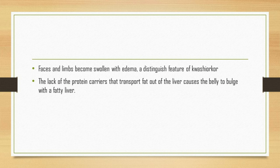Other factors that may contribute to kwashiorkor include lack of essential vitamins and minerals, lack of dietary antioxidants, aflatoxin (a toxin from mold that commonly grows on crops in hot and humid climates), parasites, and infectious diseases particularly measles, malaria, and HIV. Significant life stress including famine, deprivation, war, and natural disasters can also play a role.